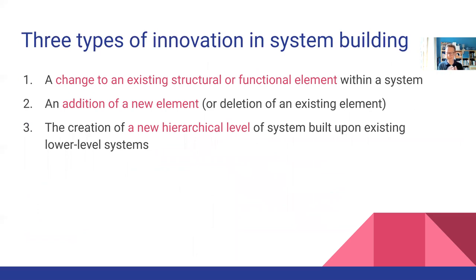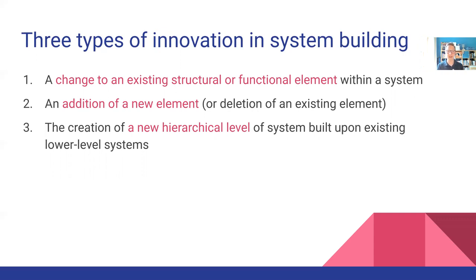If we think about innovations in terms of making changes to a system, that suggests there are three types of innovation that might be possible. One would be a change to an existing structural or functional element — a change to a component or a relationship within the system. Another type would be the addition of a new element or deletion of an existing element from the system. And then a third would be the creation of a new hierarchical level of system built upon lower-level systems.